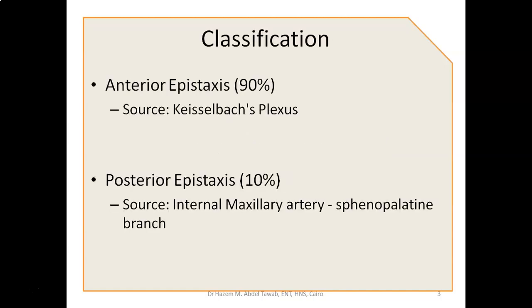In order to manage epistaxis, we need to know from where that bleeding comes from, so classification is very important. We have anterior epistaxis and posterior epistaxis. The difference between anterior and posterior is correlated to the piriform aperture — anterior epistaxis is anterior to that, and posterior epistaxis is posterior to that.